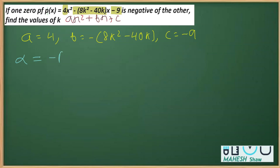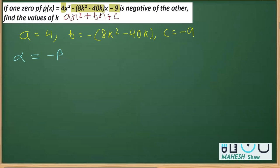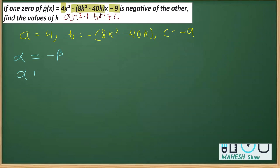is negative of the other, meaning α = -β. Transposing, we get α + β = 0. We know the sum of zeros is -b/a in terms of coefficients, so α + β = -b/a = 0. What is b here? b = -(8k² - 40k).